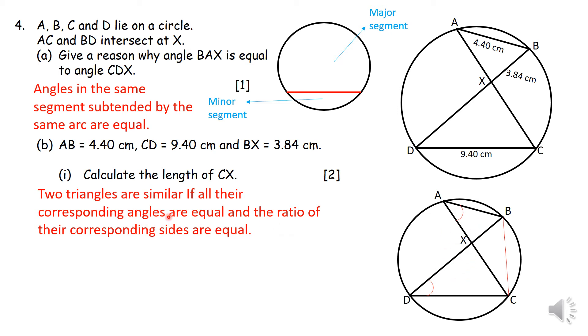So their corresponding angles are equal, and the ratio of their corresponding sides are also equal. So that means that if I take the 4.4 over the 9.4, and I let it equal to the 3.84 over the CX that I'm looking for, and you then simply just do your mathematics, like you cross multiply, and then you solve that, you should get that CX is equal to 8.20 centimeters.